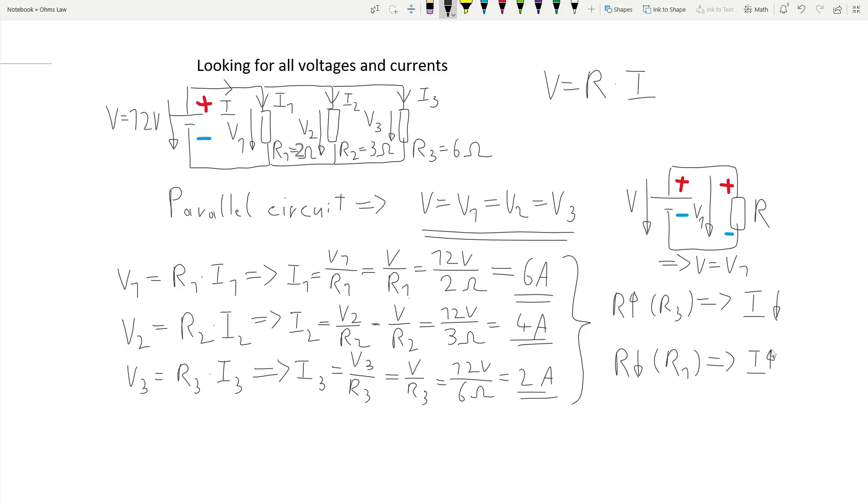There is now only one more thing left to do. We have to calculate the total current I. This can be done by using Ohm's law and the total resistance. We can calculate the total resistance by using the parallel formula.